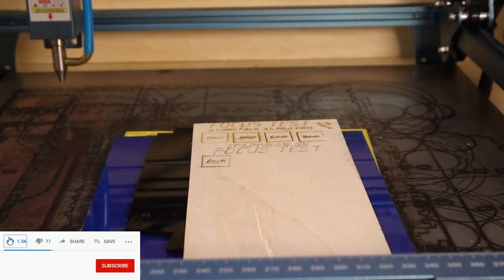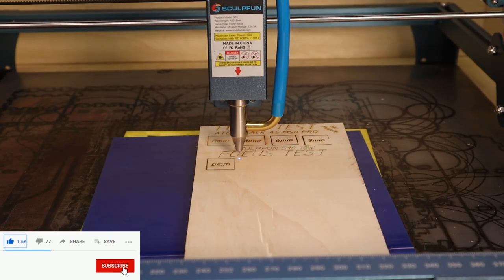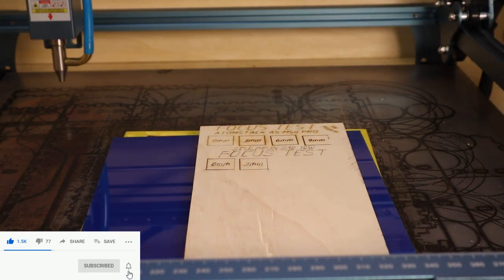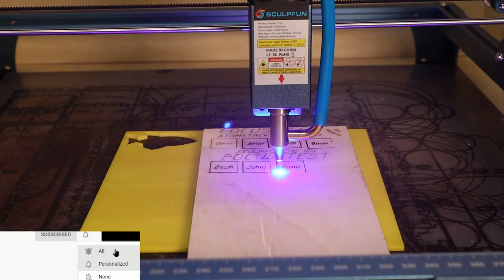Then, I keep removing the 3mm sheets one by one without readjusting the focus to see how the laser beam shape looks further away from the optimal focus.